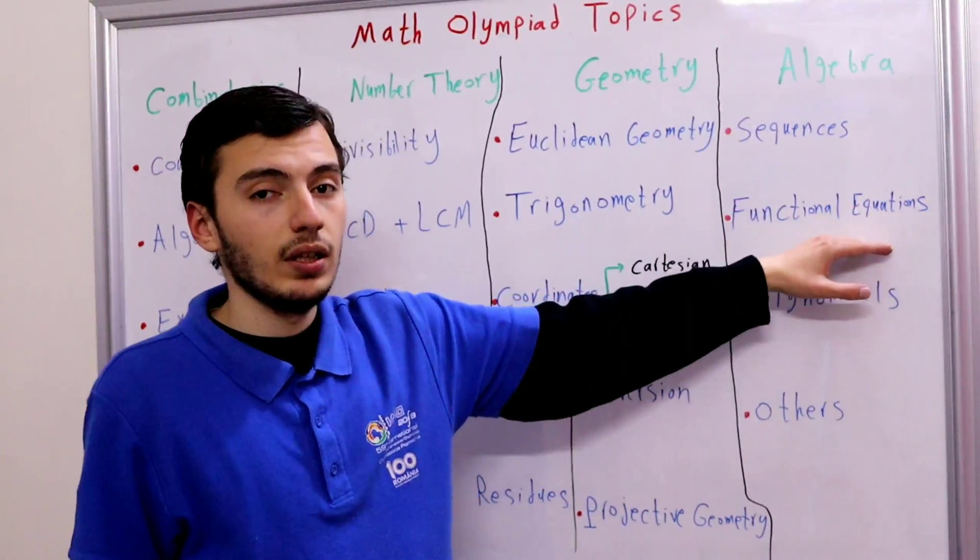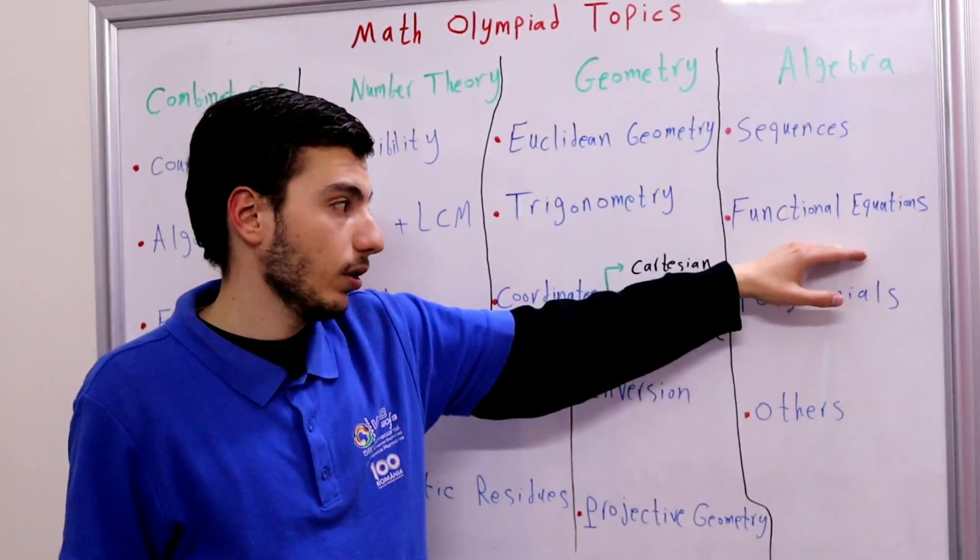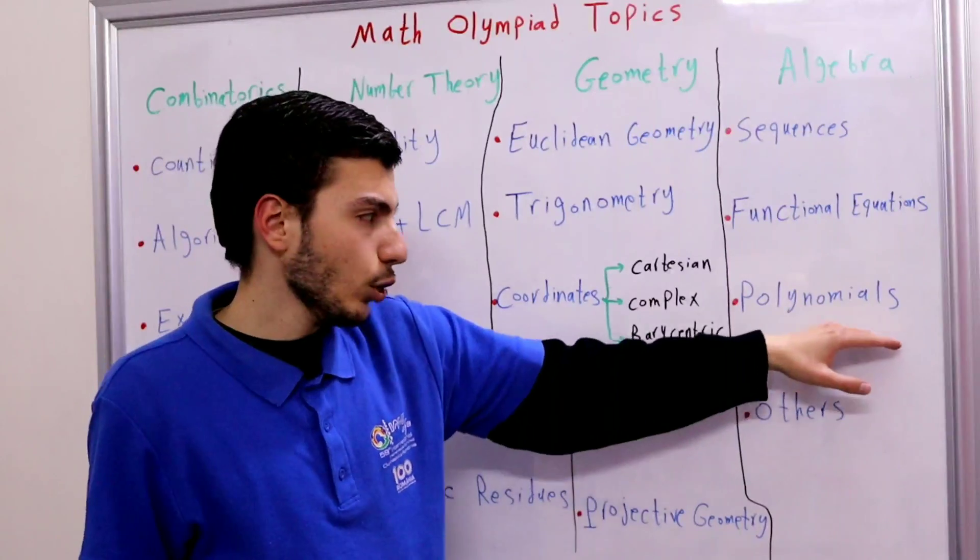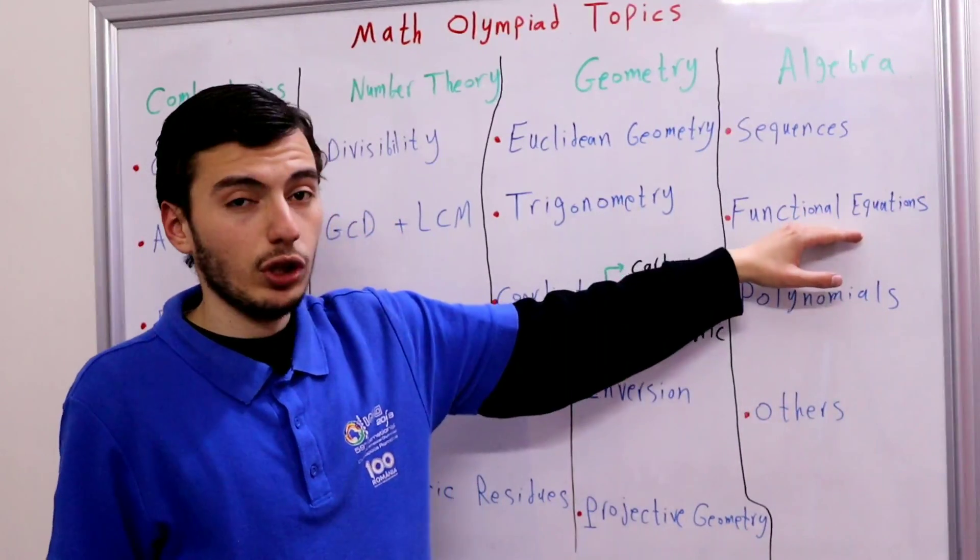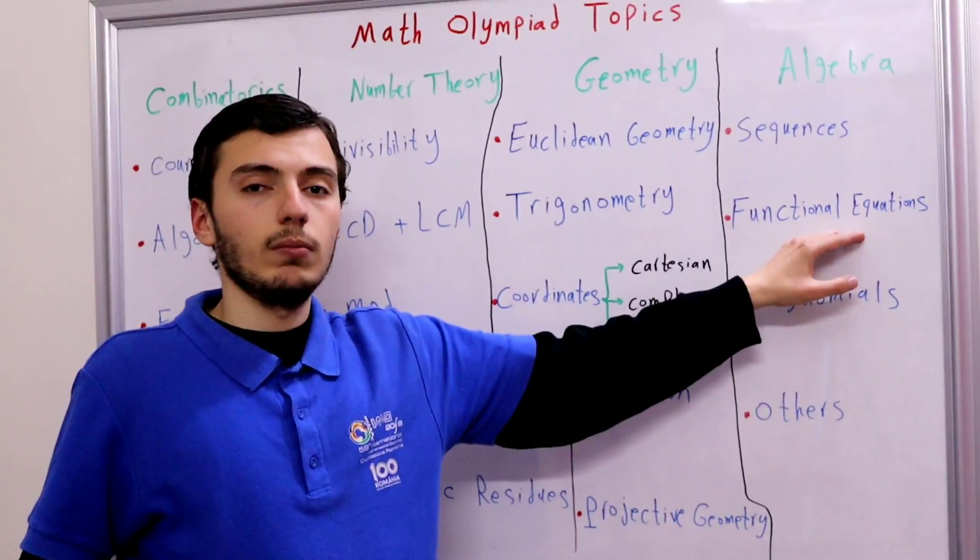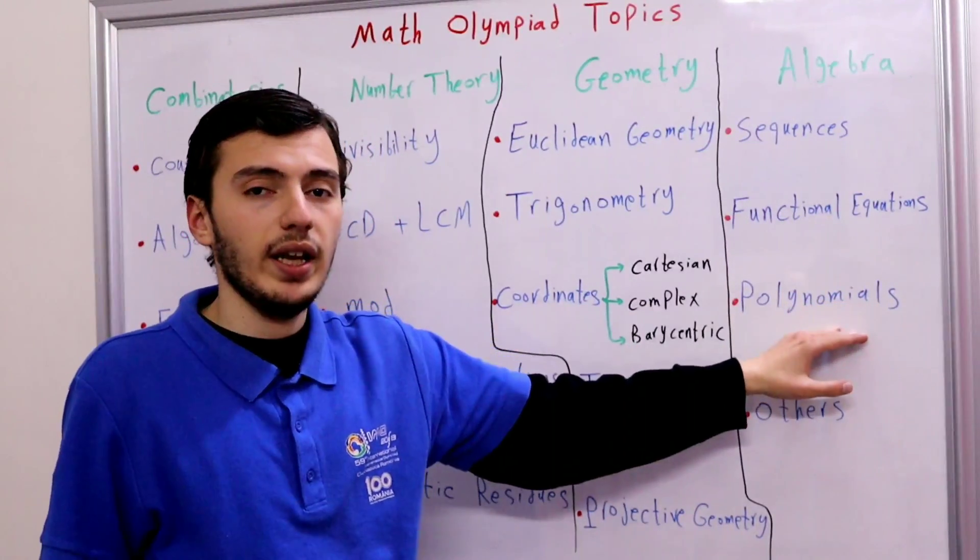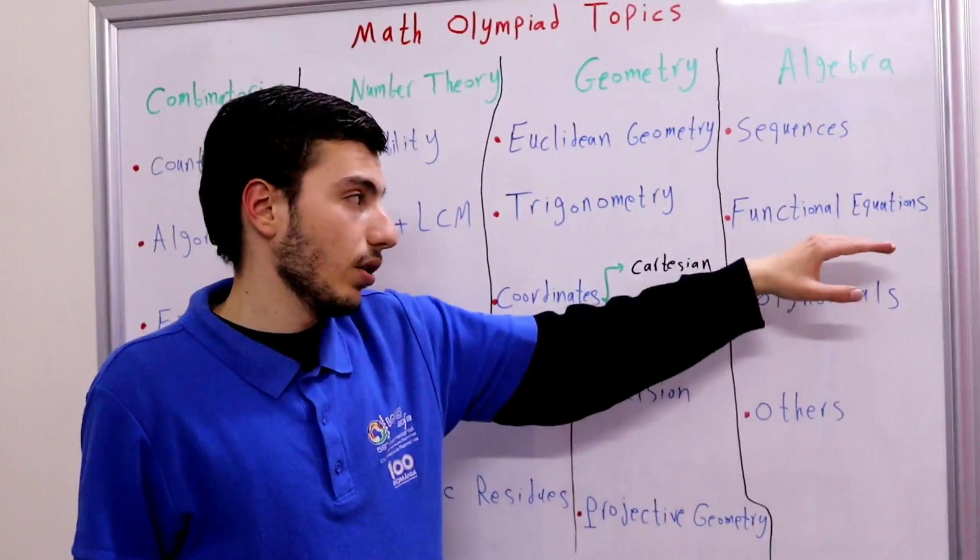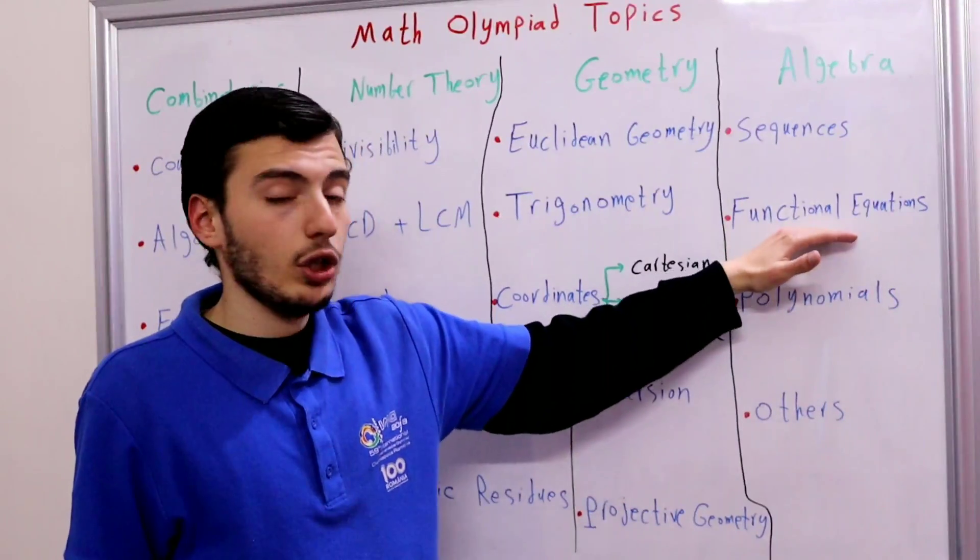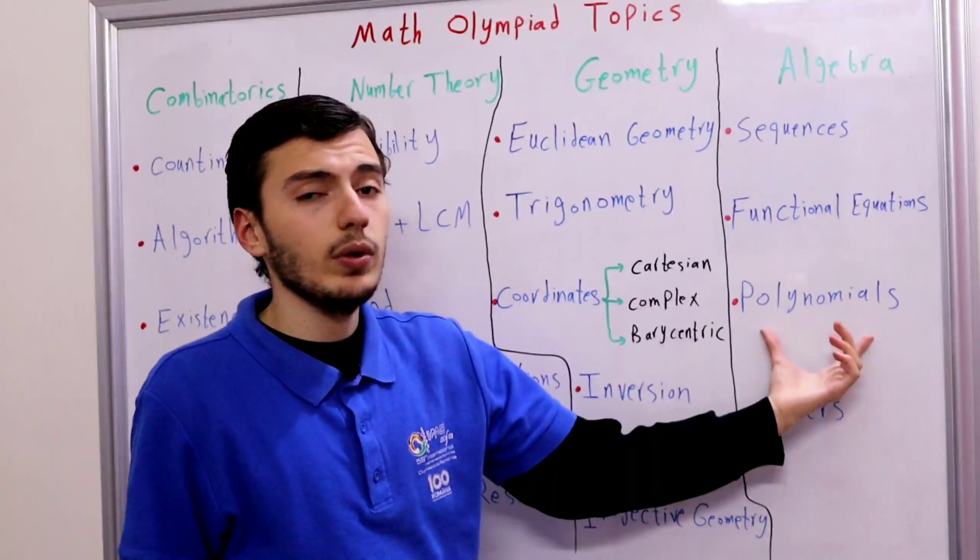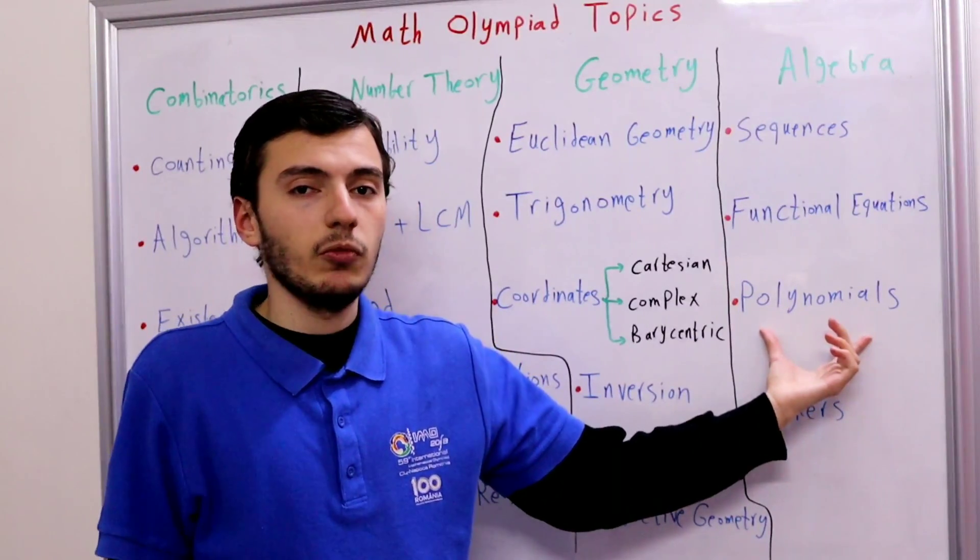So that is functional equations. You should really prepare this to prepare for Math Olympiad contests. The third subtopic is polynomials. Actually polynomials are really similar to functional equations. So the problem statement usually is: find all polynomials that satisfy some relation, just like functional equations. But the importance of polynomials is decreasing these days for some reason.